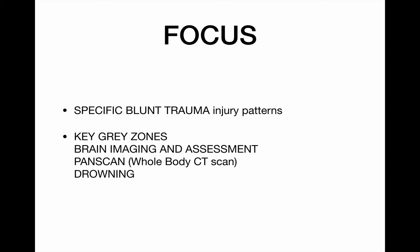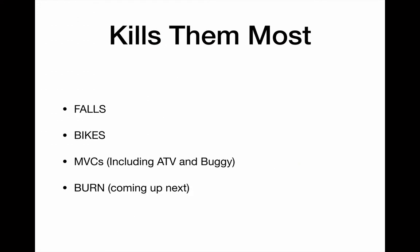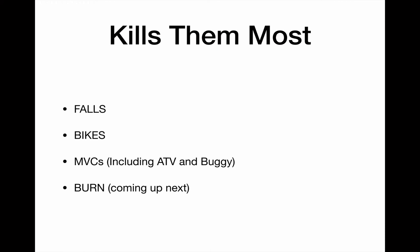Our focus today is specifically on injury patterns and blunt trauma. The most common reason for a child to die is road traffic accidents and unintentional injuries worldwide; the third most common is drowning. Within the unintentional injury group, falls and bikes are the vast majority. MVCs include ATVs or buggies. Burns also require special care in pediatrics and will be covered in a separate talk.